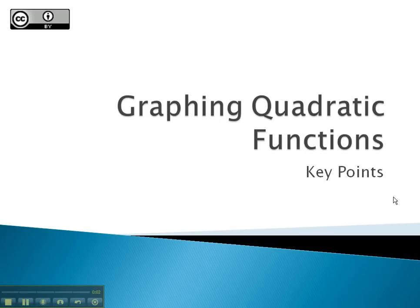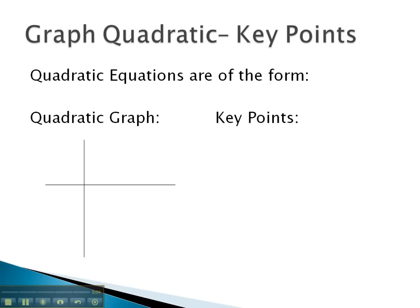In this video, we'll look at graphing quadratic functions by identifying key points. A quadratic equation is one that is in the form ax squared plus bx plus c. Any equation that's in this form will generate this u-shape, which we call a parabola.